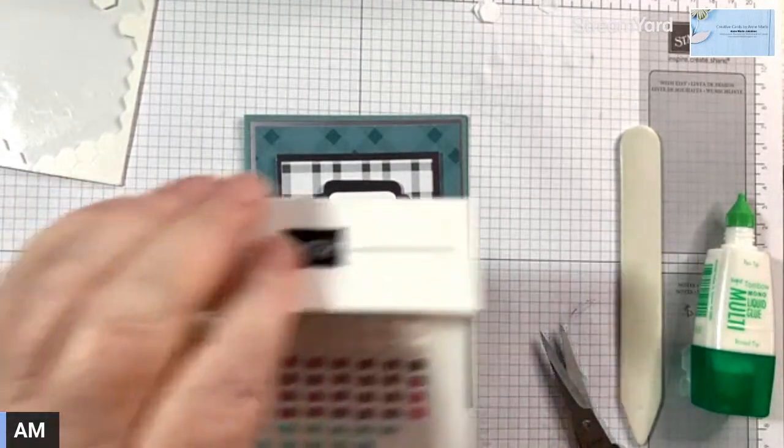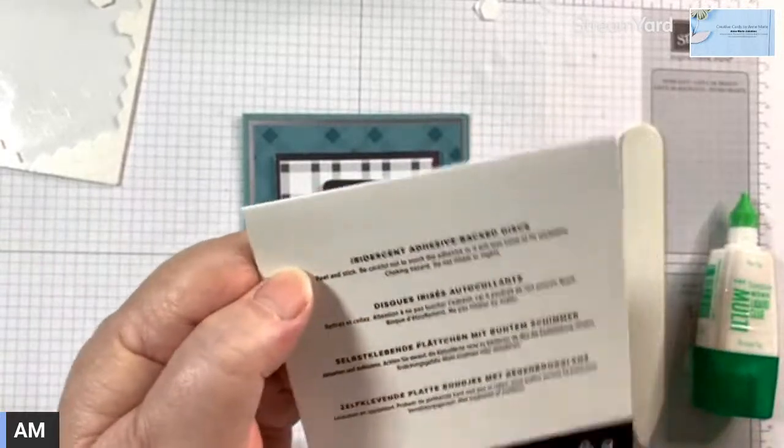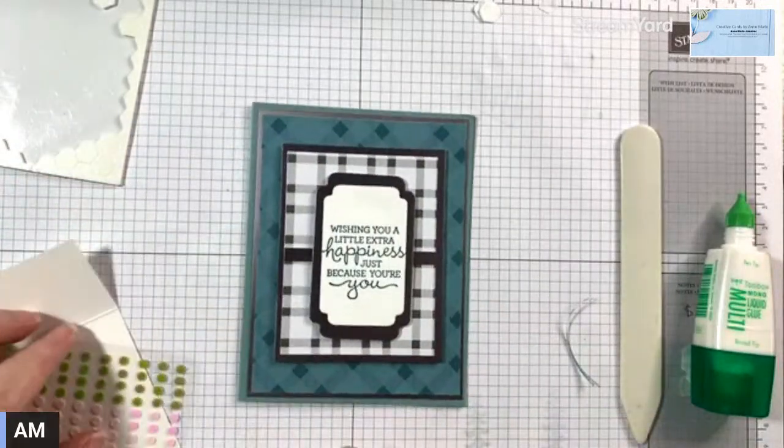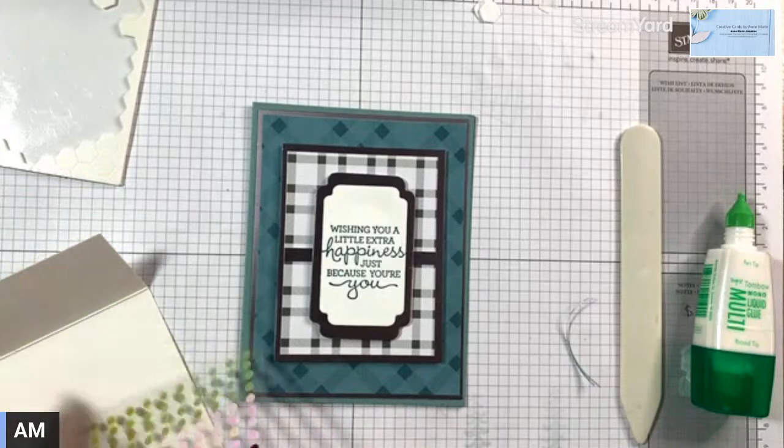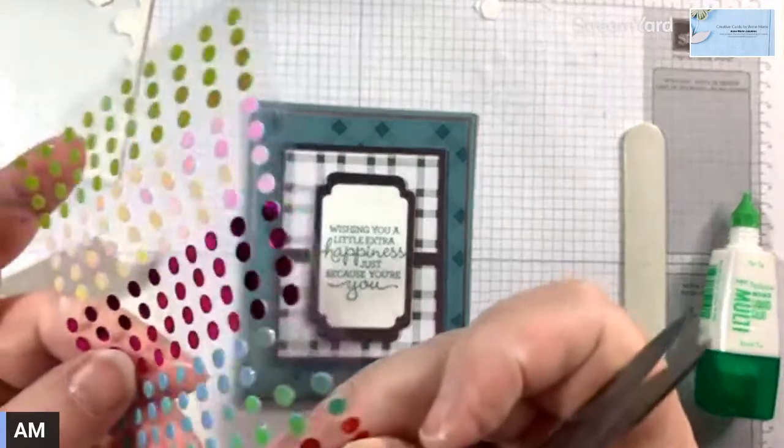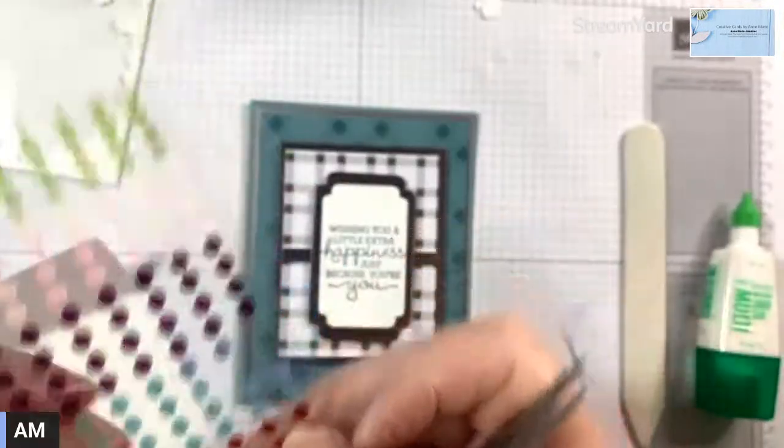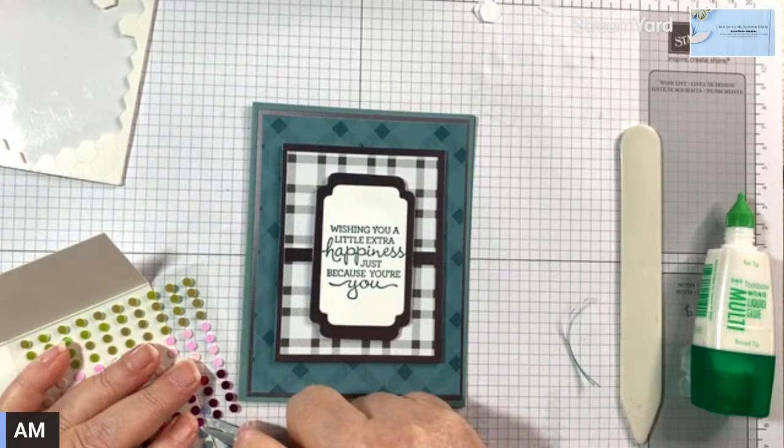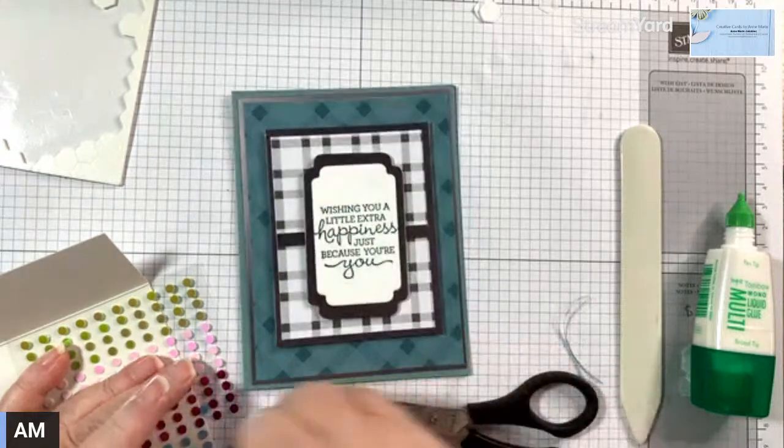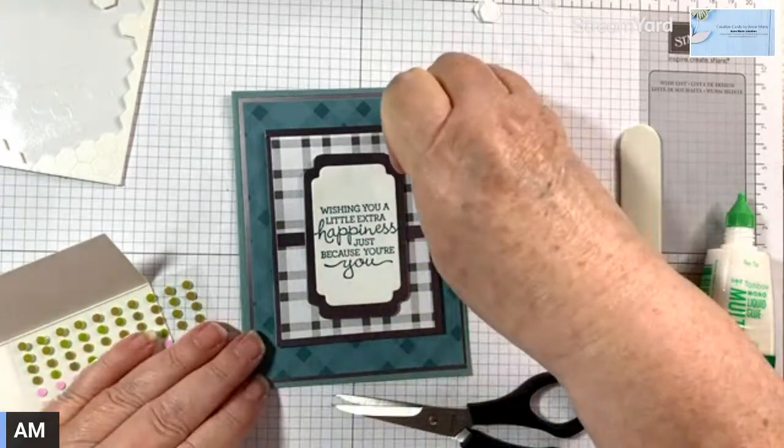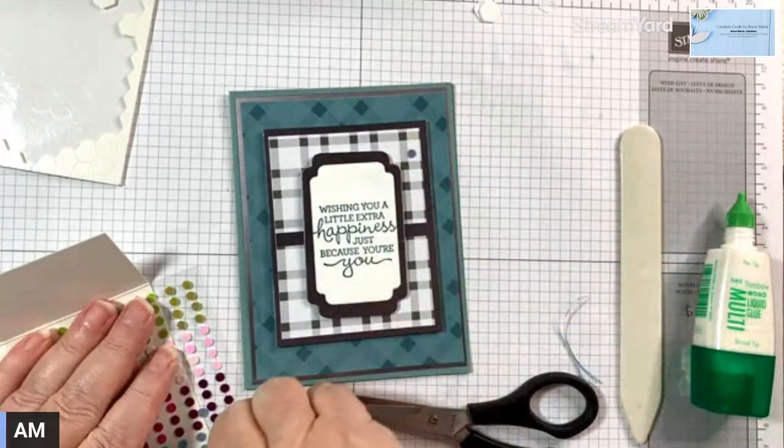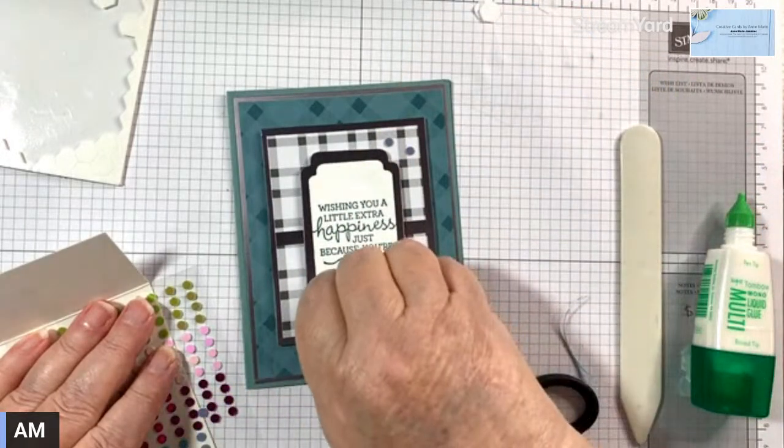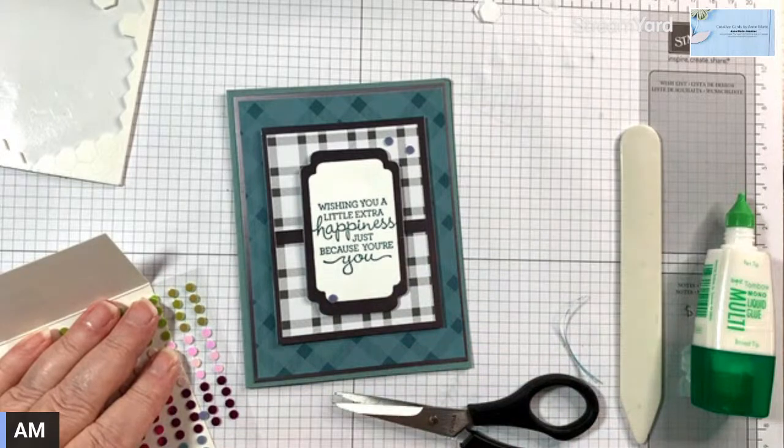Let's put some bling on it. So these are called iridescent adhesive back discs. So I'm going to use, depending on the way you look at it, it turns a different color. I'm going to use these ones. One here, two up here and down here. Yeah, I think that will do.